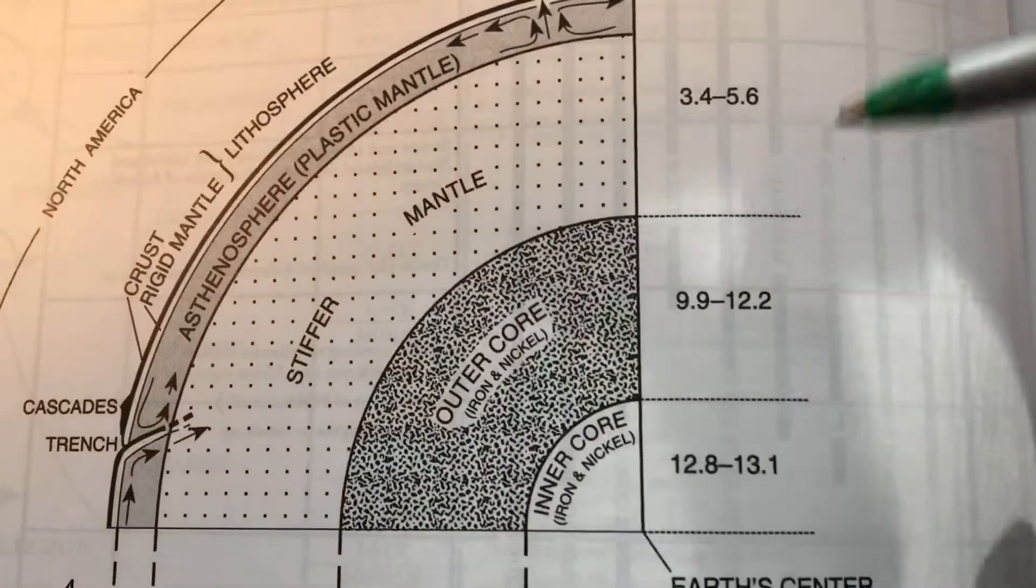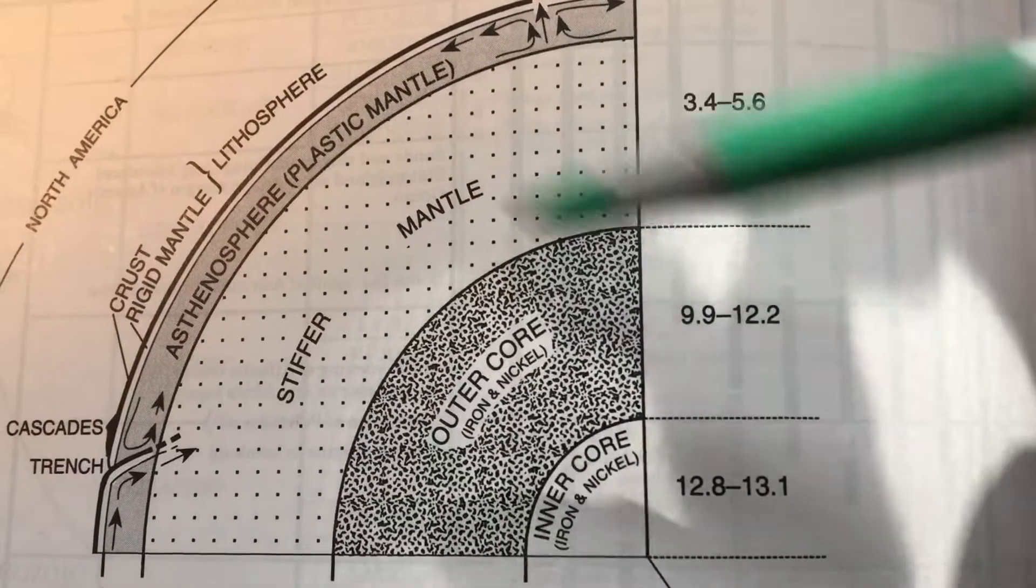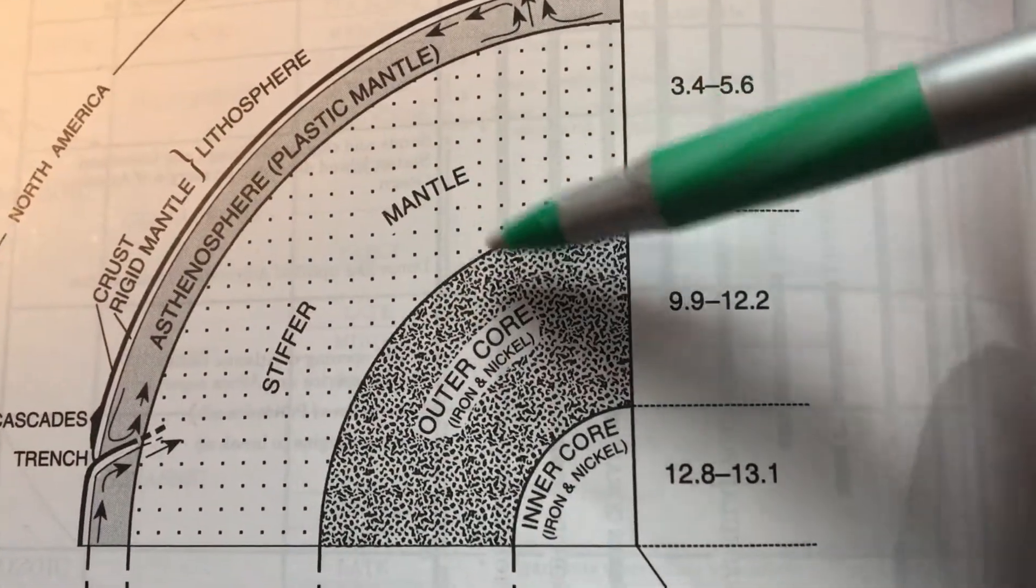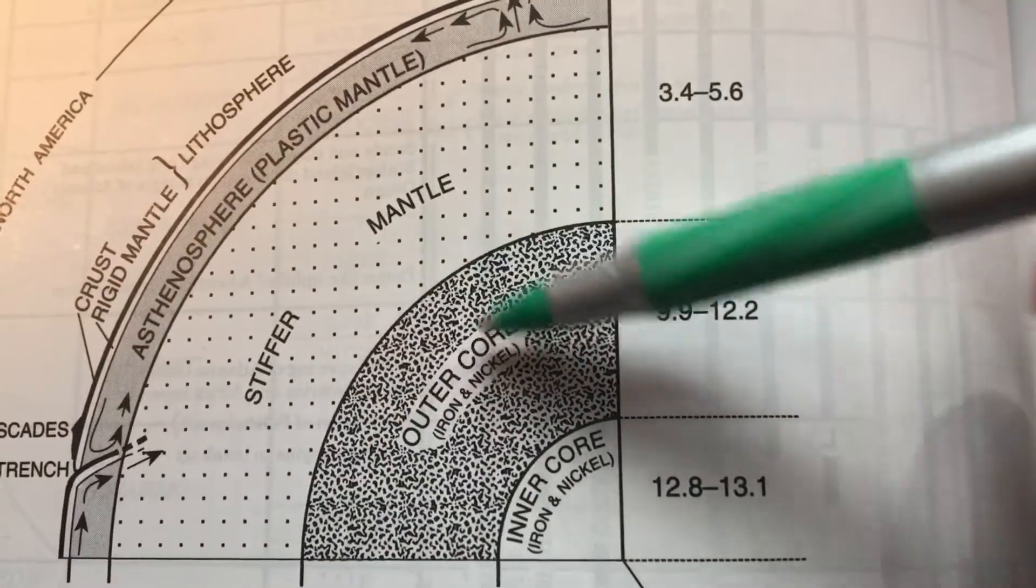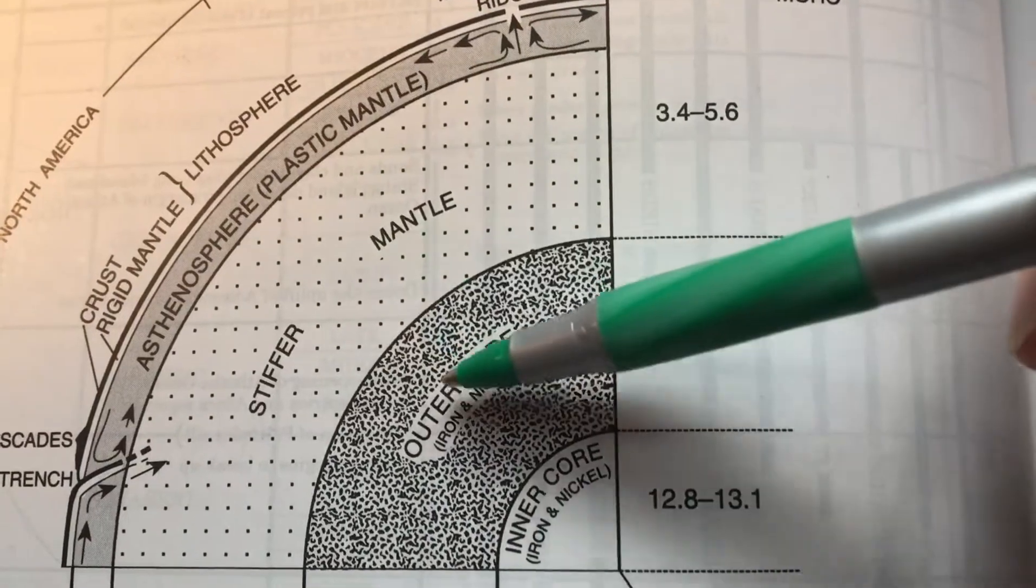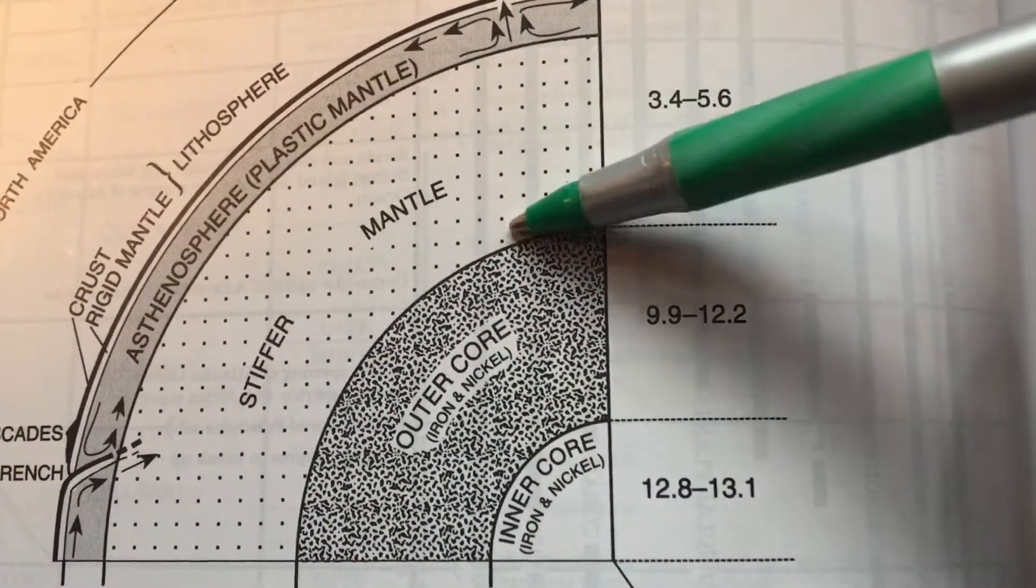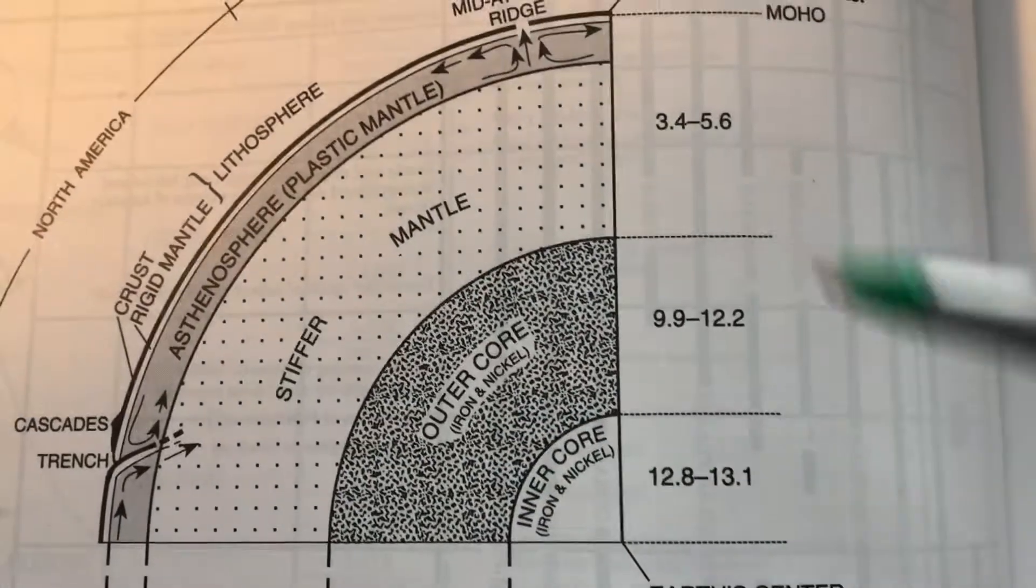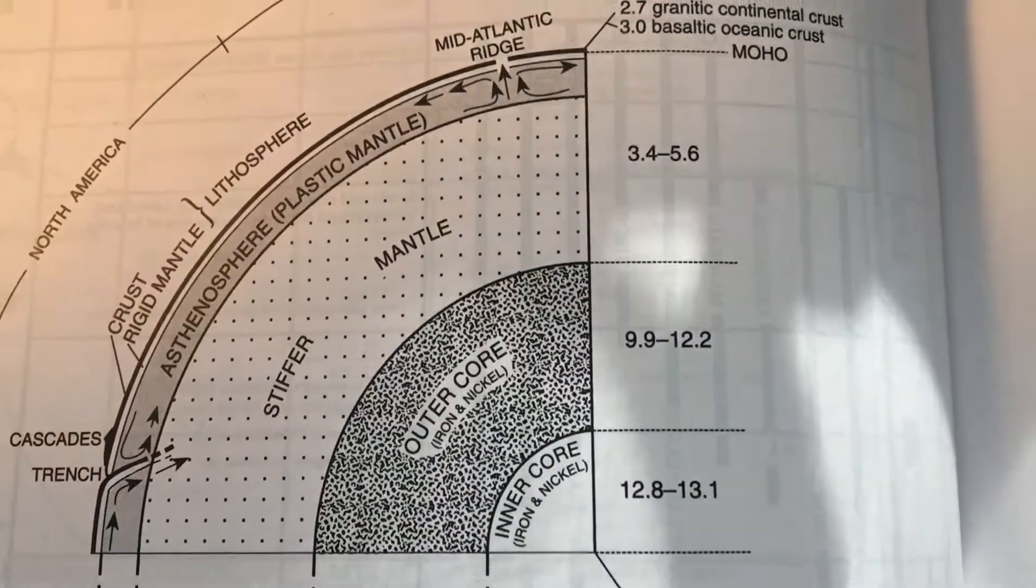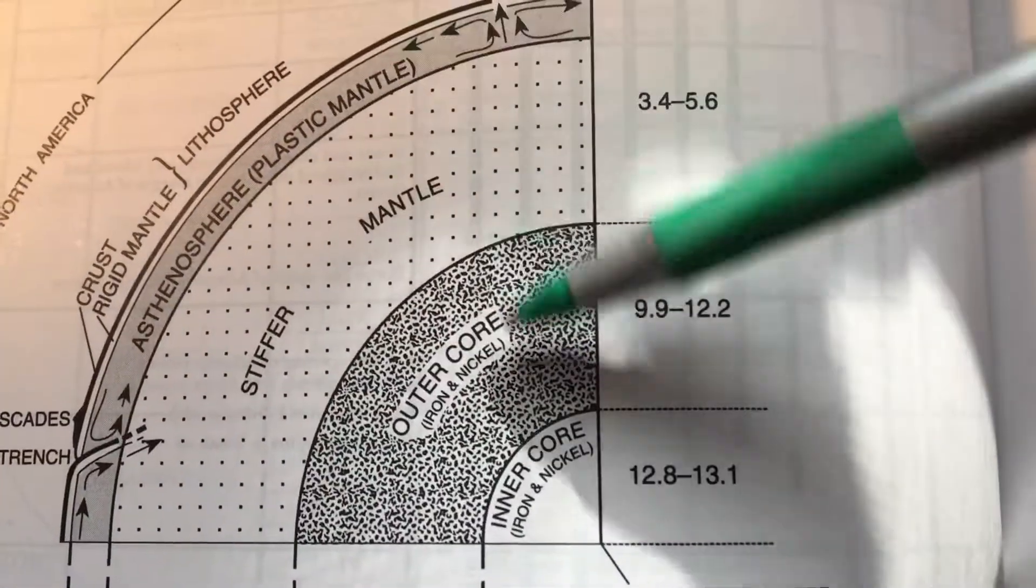And we do that by following earthquake waves as they pass through these layers. As they go through different densities, they bend. As they go through different phase changes, they might bounce too. We're going to talk about the outer core being a liquid, this boundary between a soft solid, a liquid, and a harder solid. As earthquake waves hit that, they do different things. And by setting up earthquake monitors, seismograms all over the planet, we've been able to figure that out.